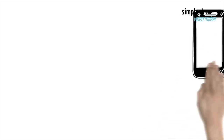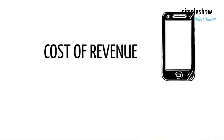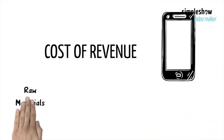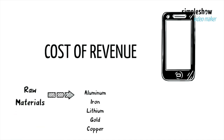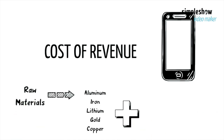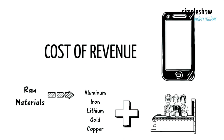In the case of the iPhone, cost of revenue includes costs of raw materials like aluminum, iron, lithium, gold, and copper, as well as labor costs of factory workers directly involved in manufacturing.